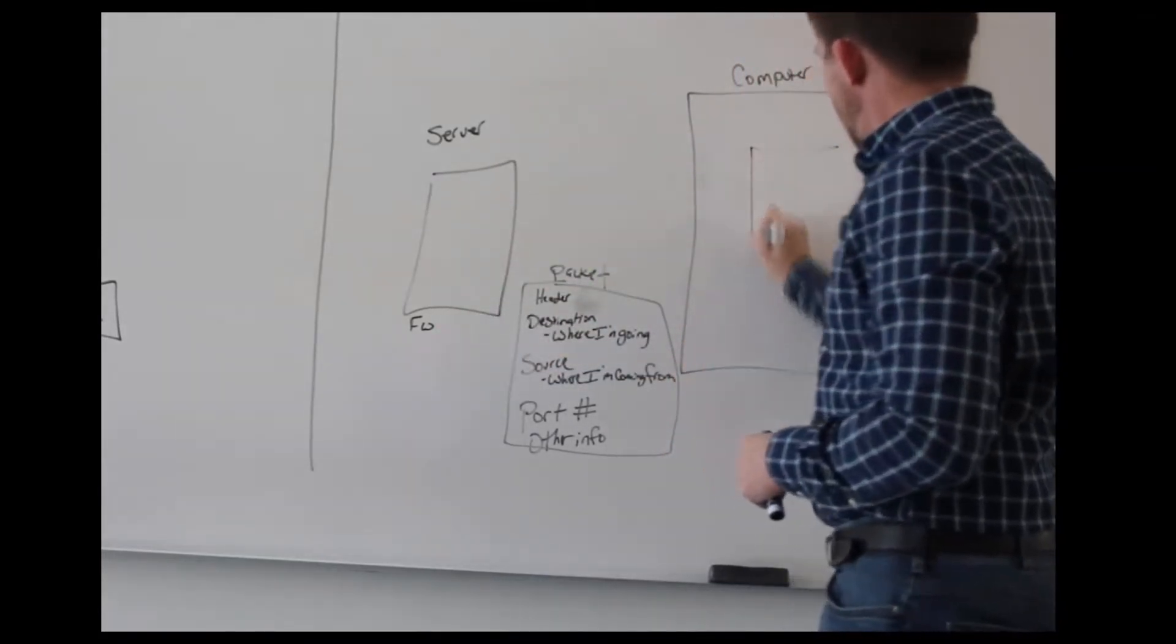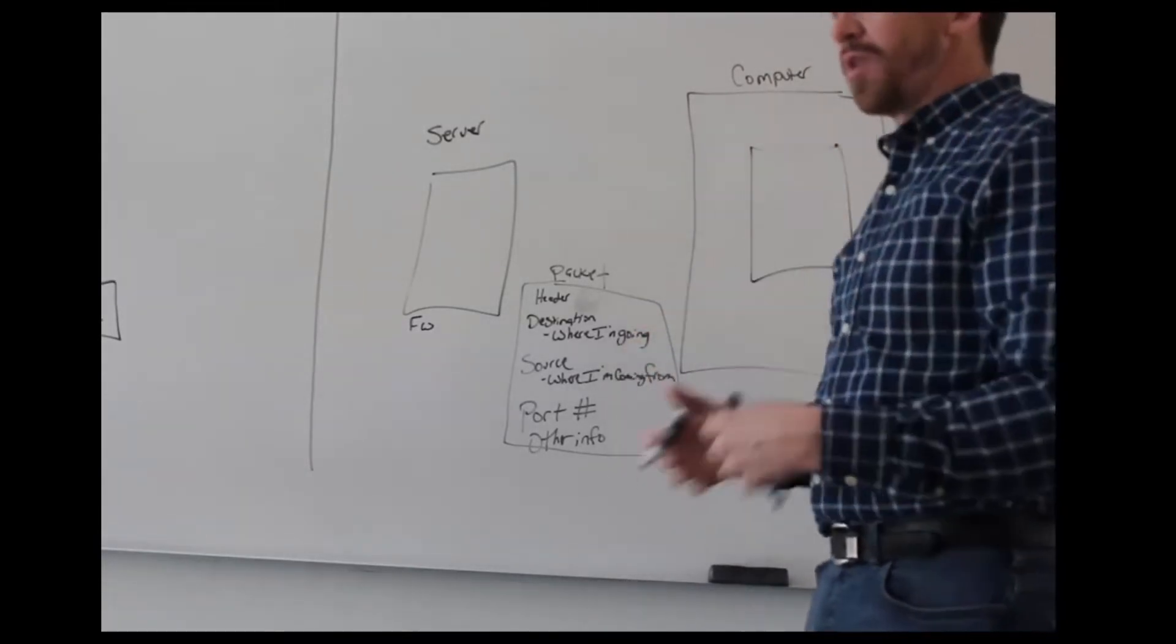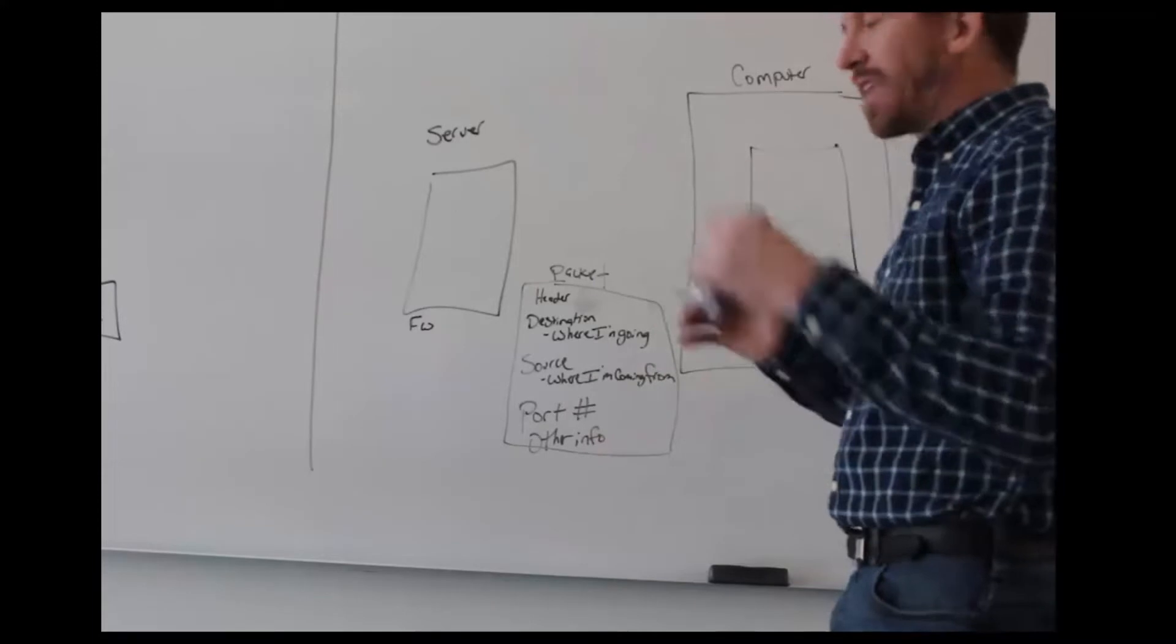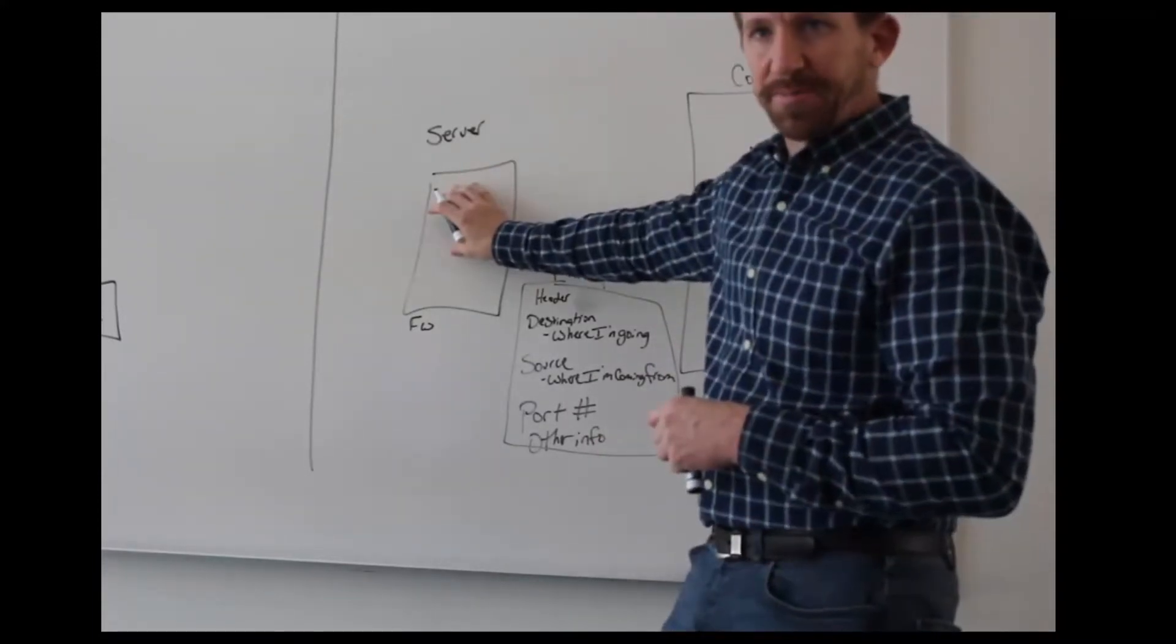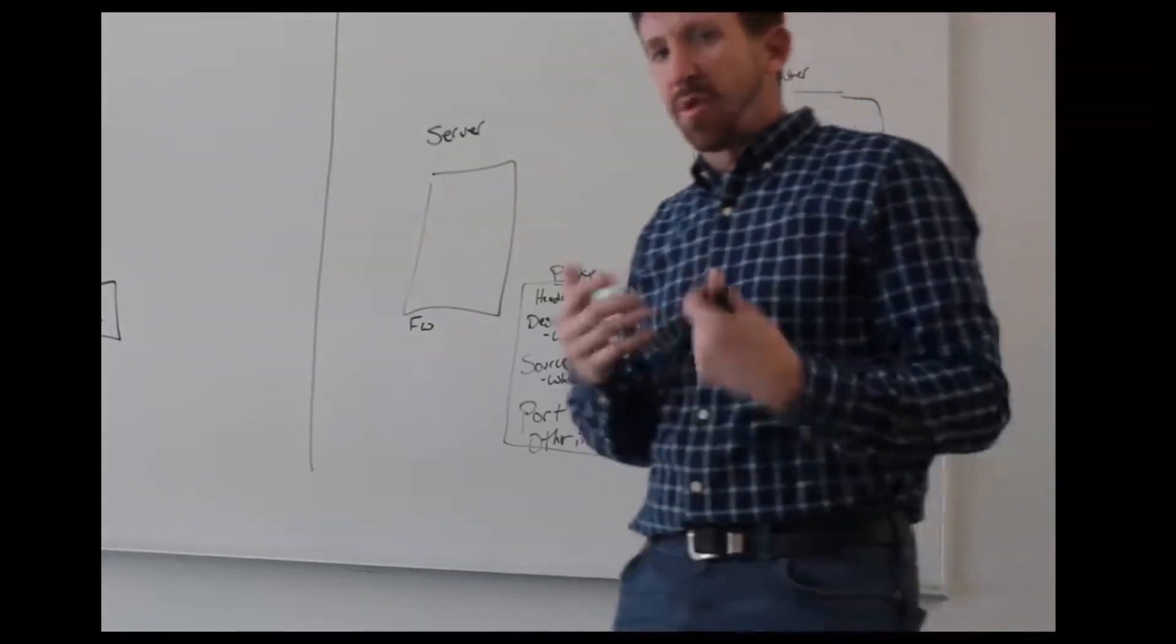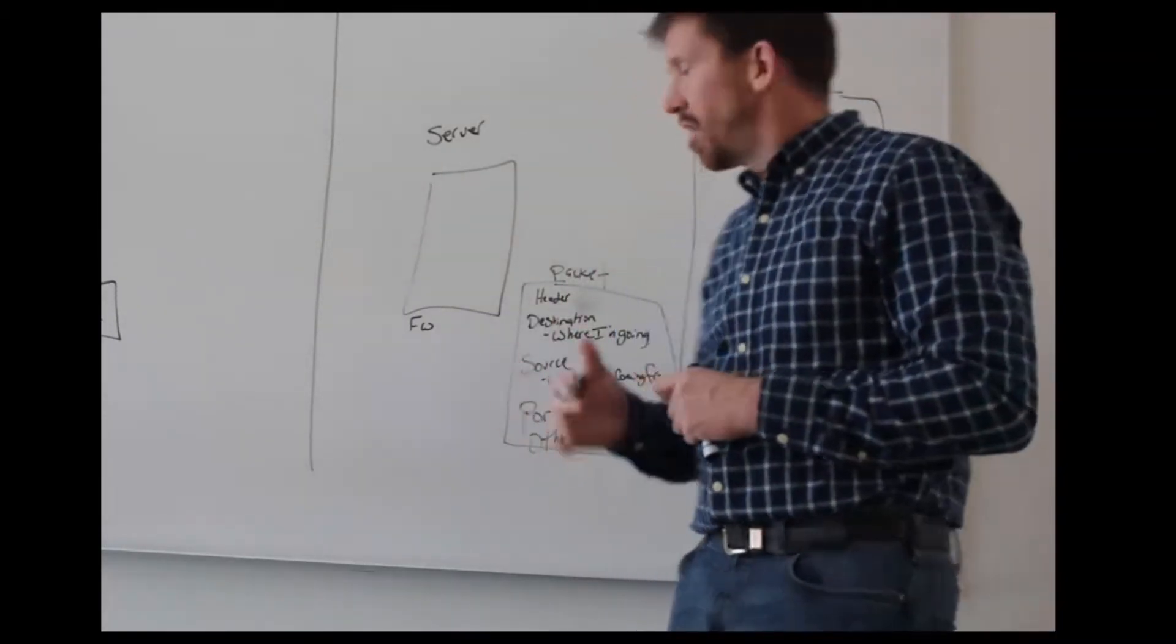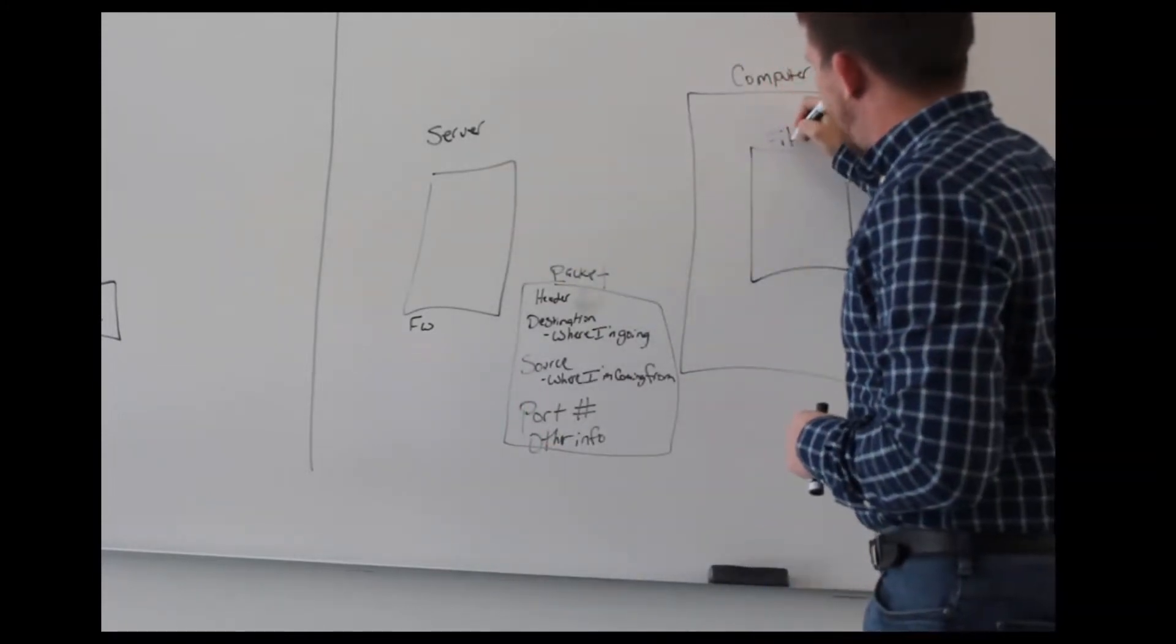This computer has a file on it. It doesn't matter what that file is - it can be Word documents, Excel documents, pictures, any file. We want to transfer that file to our server. So when we go through that process, whatever our business process is to move this file to this server, we go ahead and go through that process.